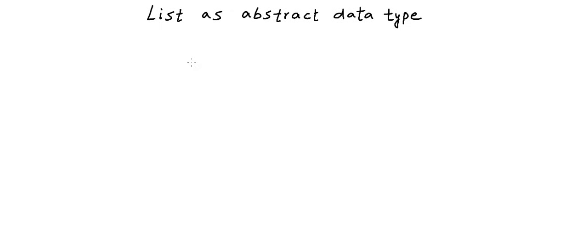In our previous lesson we introduced you to the concept of data structures, and we saw how we can talk about data structures in two ways: one as a mathematical and logical model that we also term as an abstract data type or ADT, and then we also study data structures as concrete implementations.